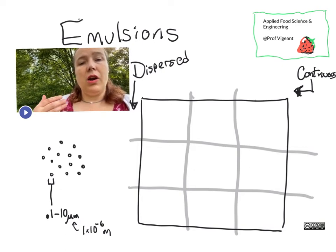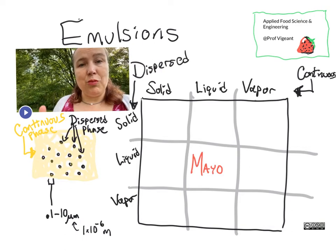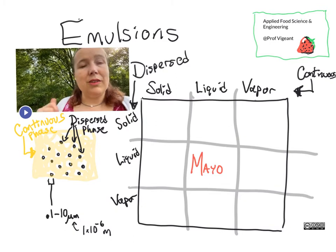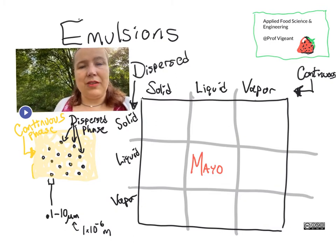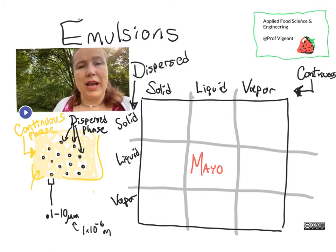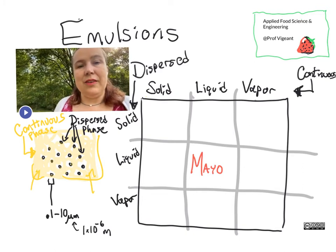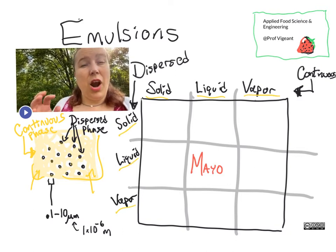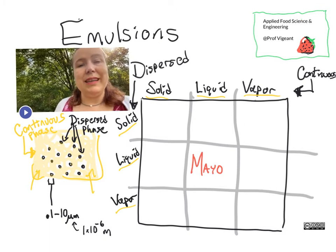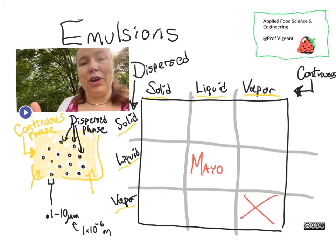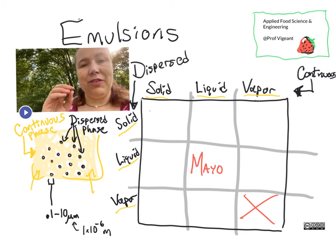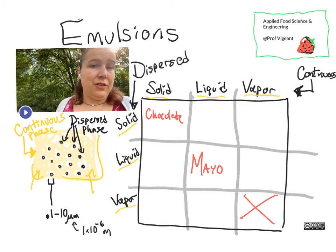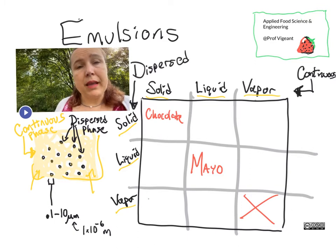There are other types of emulsions as well. Pretty much any phase you can think of as continuous, which is the one that is throughout the medium, could be a solid, a liquid, or a gas. And then those same phases could be what is dispersed: solid, liquid, gas. There are no gas-in-gas emulsions, but there are solid-in-solid emulsions. That was part of what was happening with chocolate. There are liquid-in-solid emulsions and gas-in-solid emulsions. That's, in fact, a great way of describing cake.